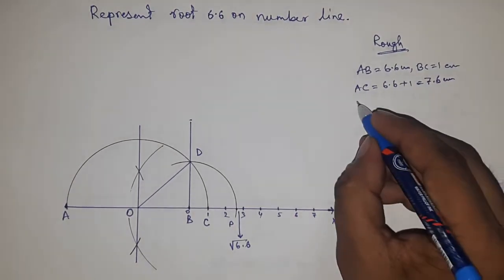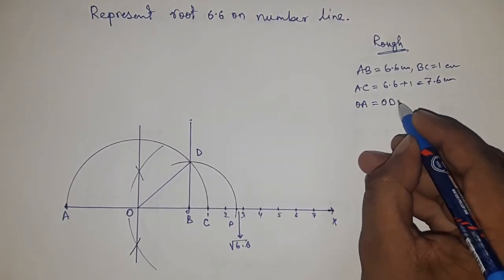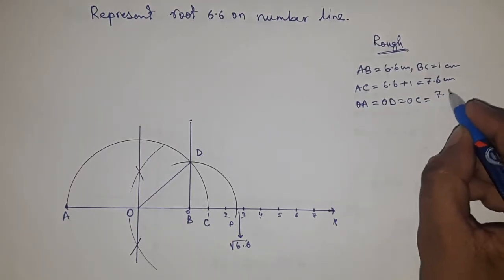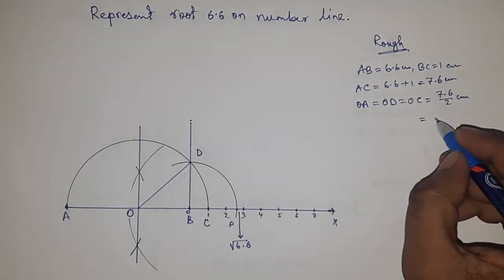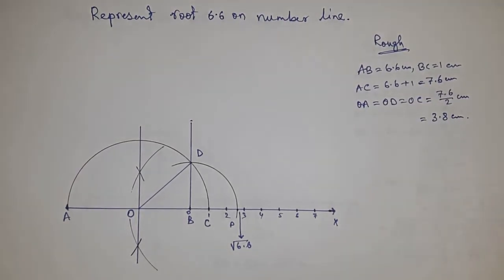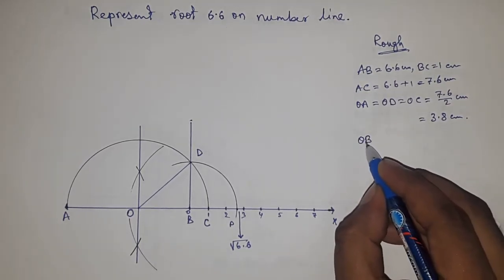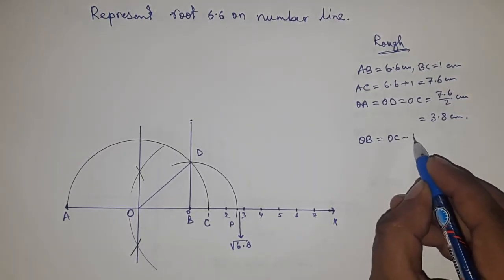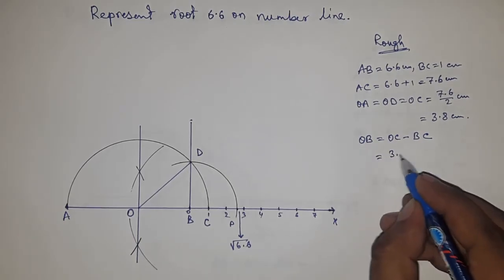The radius OA, OD, and OC equal 7.6 by 2, so this is 3.8 cm. Now OB equals, putting the value of OC and BC, this is 2.8 cm.